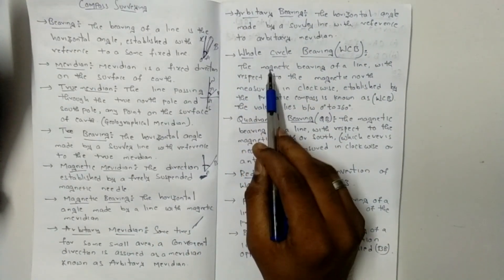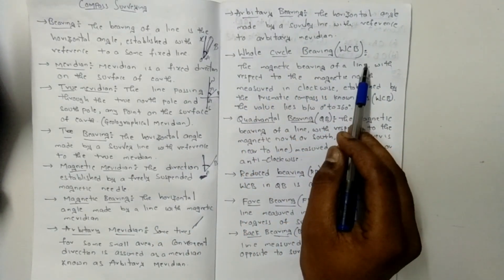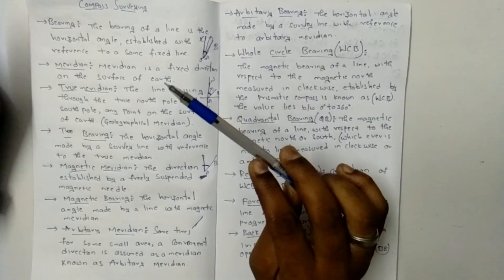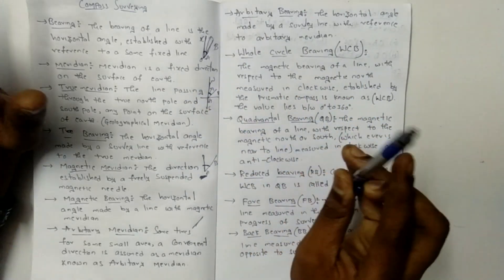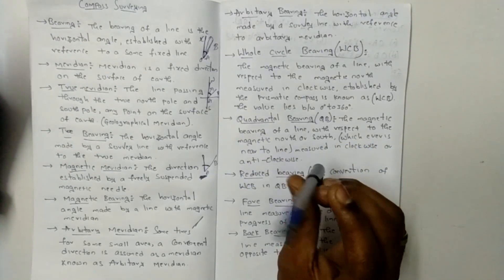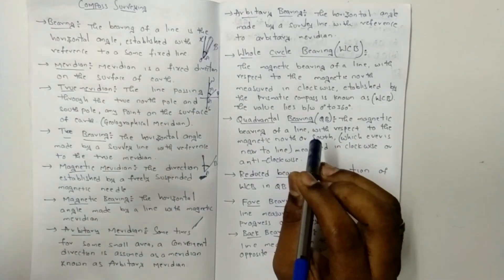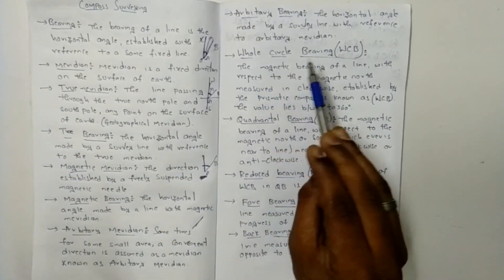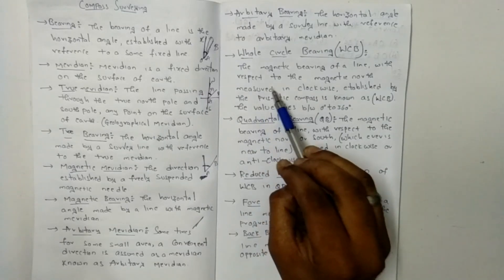Whole circle bearing: the magnetic bearing of a line measured as a horizontal angle between the line and the magnetic meridian — the direction established by a freely suspended magnetic needle — with respect to the magnetic north, measured in a clockwise direction.